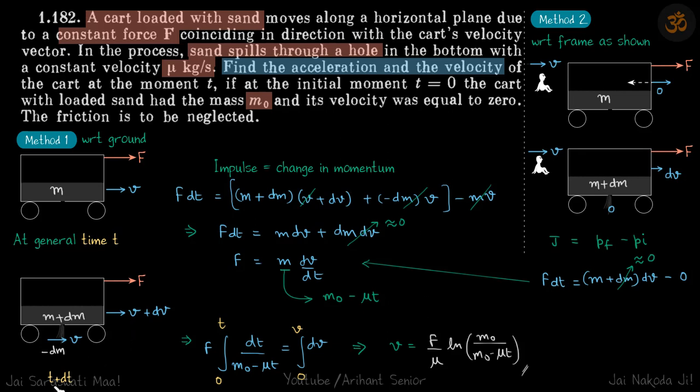So all that happened in time dt. Now we'll write impulse equals change in momentum. Only impulse is due to this force F, so F dt equals final momentum. We're writing this impulse equal to change in momentum for the cart and the sand which is falling out, both of them combined for the system, because this external force is on the system itself. So F dt equals final momentum. Of the cart, the momentum is (m + dm)(v + dv). For the sand that is falling, the momentum is -dm·v, minus initial momentum which is m·v. So you will see that some terms will cancel out and you will be left with this. And here we can neglect dm·dv as it's too small.